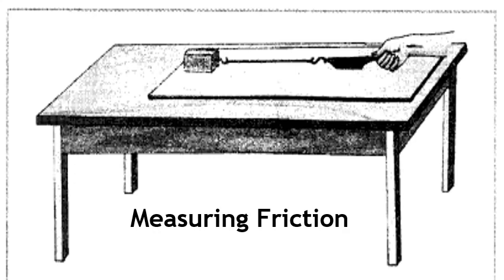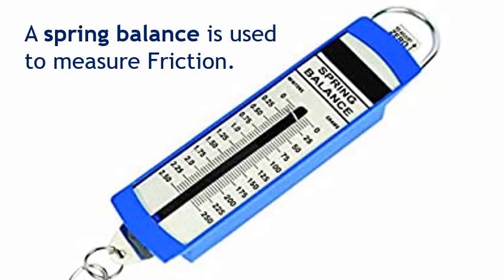How do we measure friction? An approximate measurement of friction can be made by using a spring balance. A spring balance consists of a spring having a movable pointer attached to it. The pointer moves over a scale according to the force applied on the spring and measures the corresponding stretch of the spring.